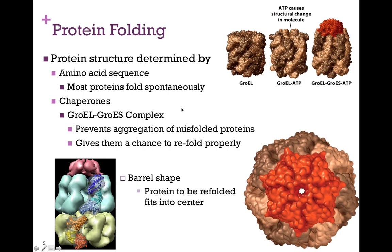One of the most prominent examples of a molecular chaperone is the GroEL/GroES complex. At the top of the screen we see the barrel-shaped structure of GroEL, composed of two heptameric rings — seven subunits in each ring — placed on top of one another. Each subunit binds an ATP molecule, causing a slight conformational change. The misfolded protein then fits within the barrel of GroEL, and the cap GroES is placed on top.